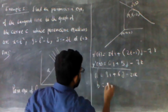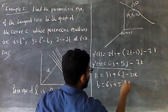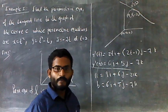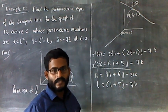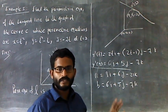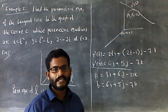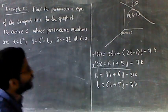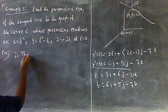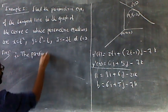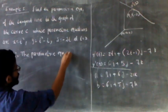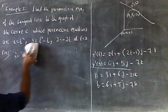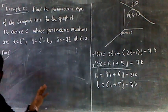B equals 6i plus a minus 7k. Then the tangent line is x plus t. Therefore, in parametric equations, we can solve parametric equations. The parametric equations and the vector equation of the tangent line.